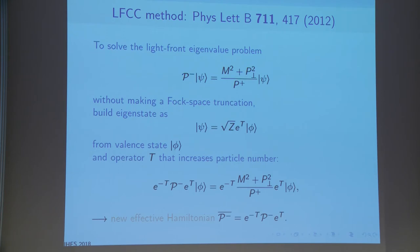This differs from the original coupled cluster methods from nuclear physics and nuclear chemistry, where the valence states are much larger and they did not create more particles, they just created excitations. The operator T conserves all required quantum numbers, including light front momentum, and of course increases particle number.